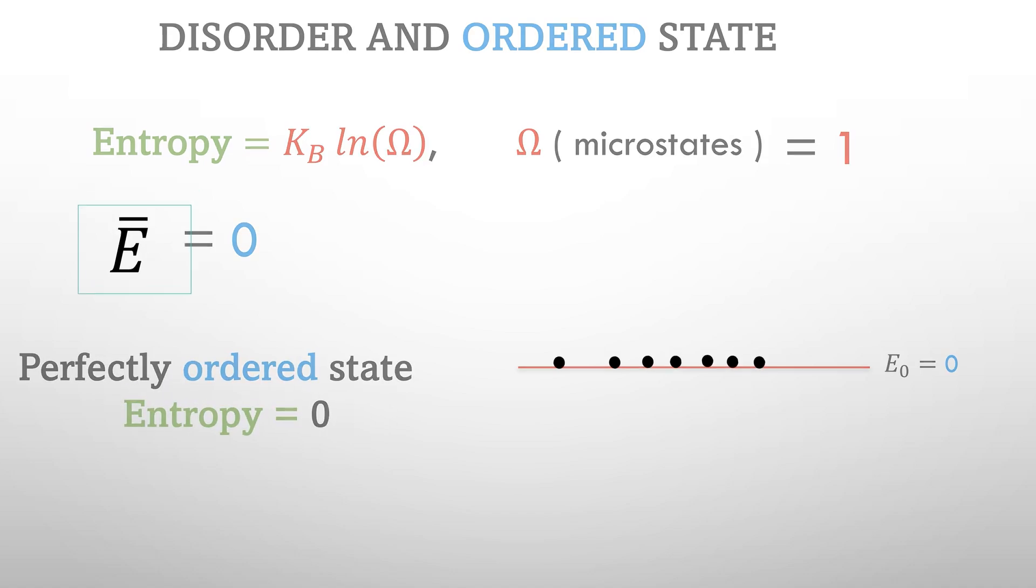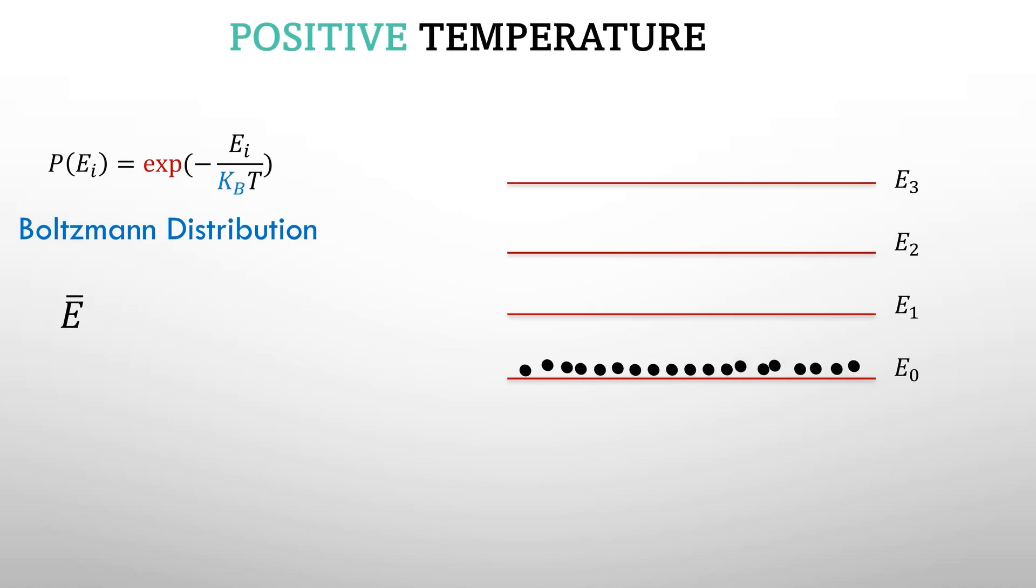If we now heat up the gas, we increase both its temperature and its total energy. So you can find some atoms now at higher energies, but you will still find more atoms at state with lower energy than at a state with higher energy. This is the Boltzmann distribution law.